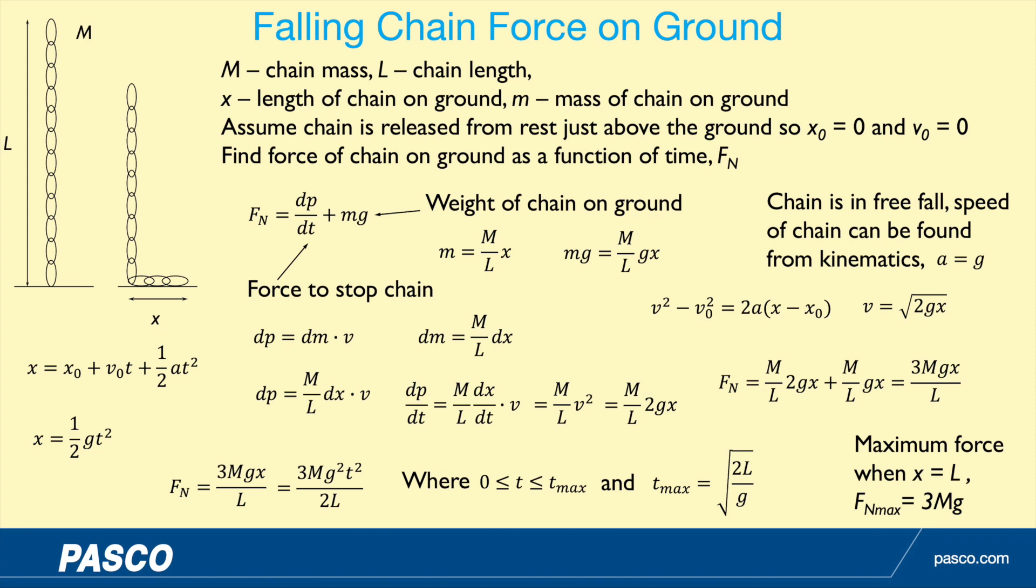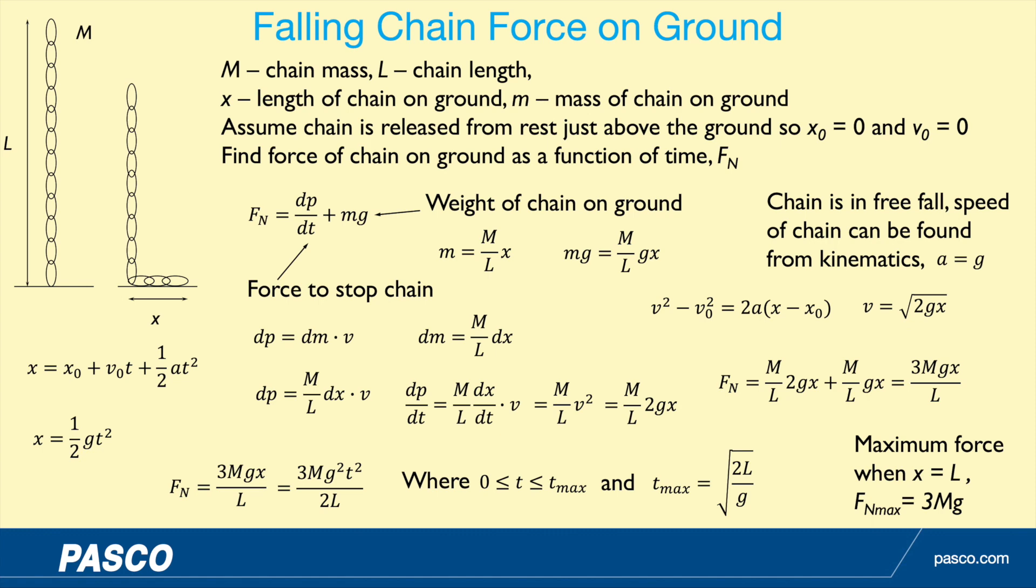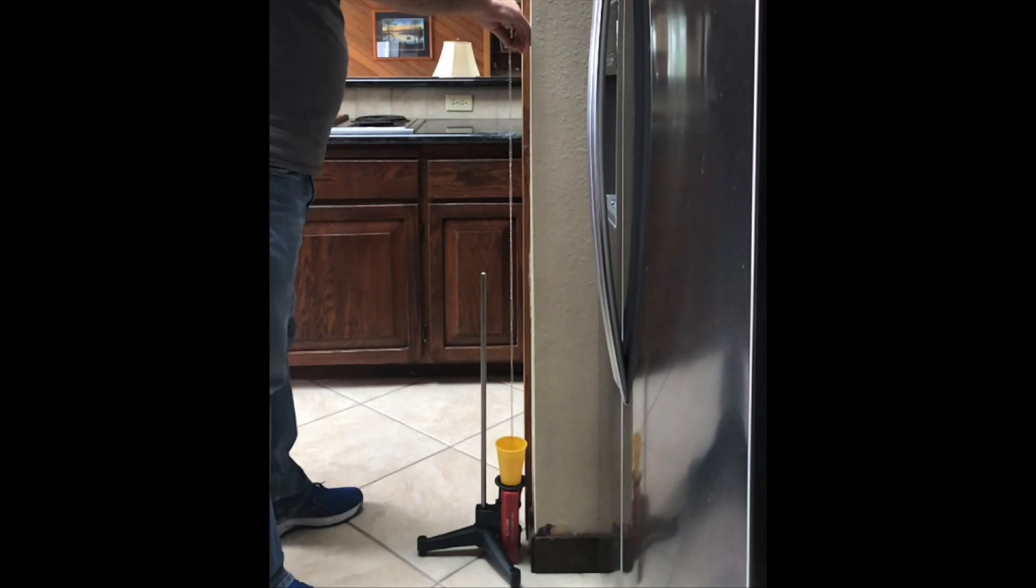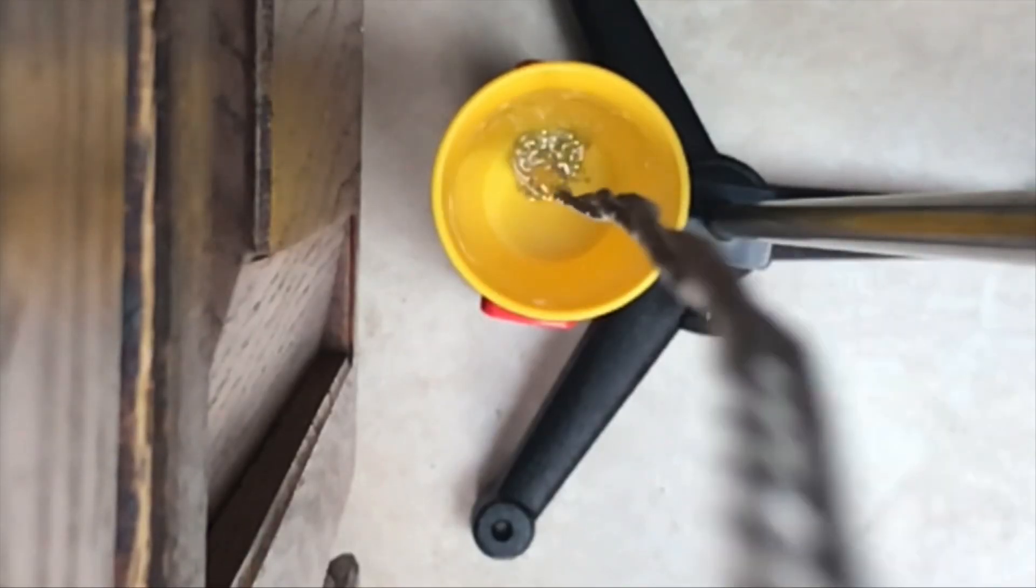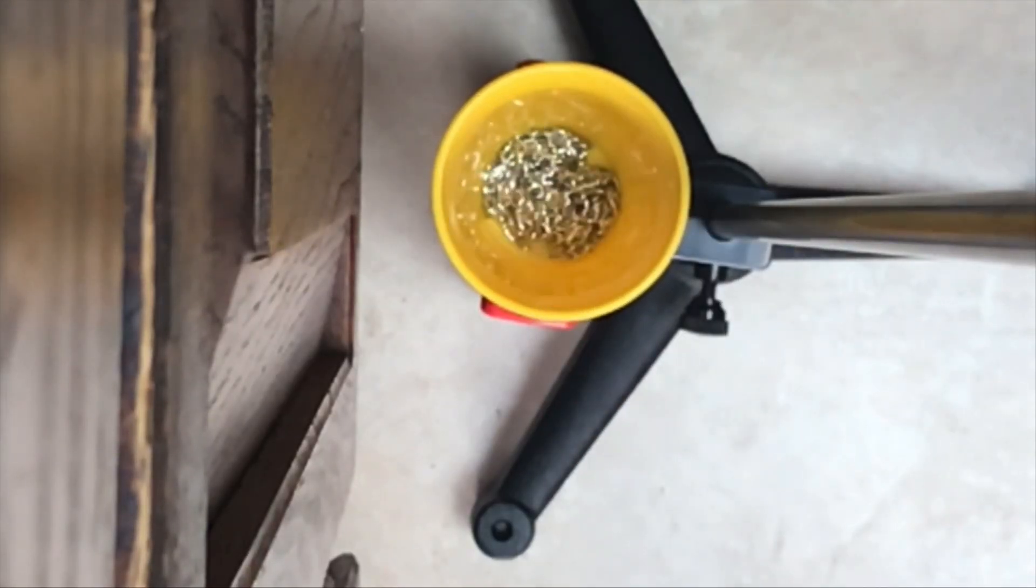What does this look like when we're dropping the chain? I've got several views here of the experiment, one just a video and then a couple of slow-mo from two different perspectives. It happens pretty quick, so the slow-mo is a little better. You can see I have a little cup to catch it in, and the cup is on a force sensor.